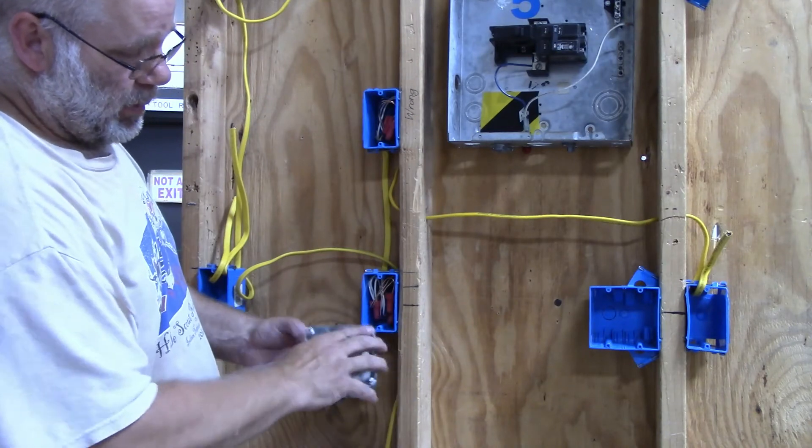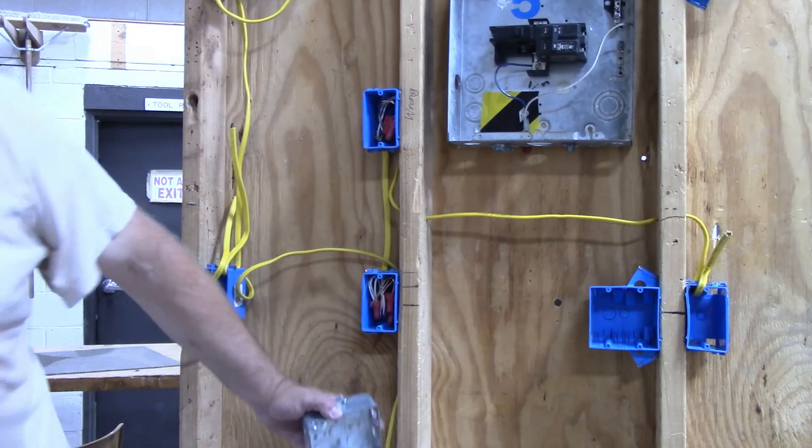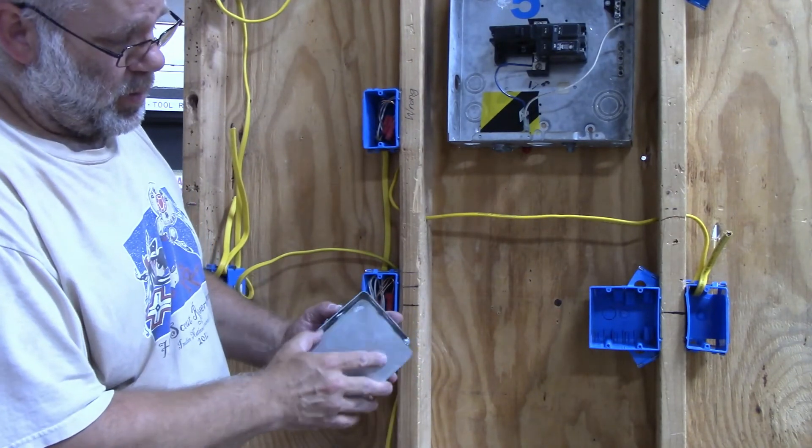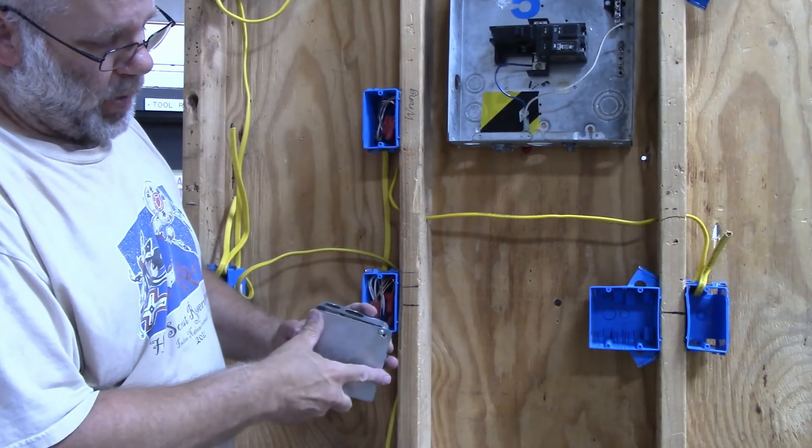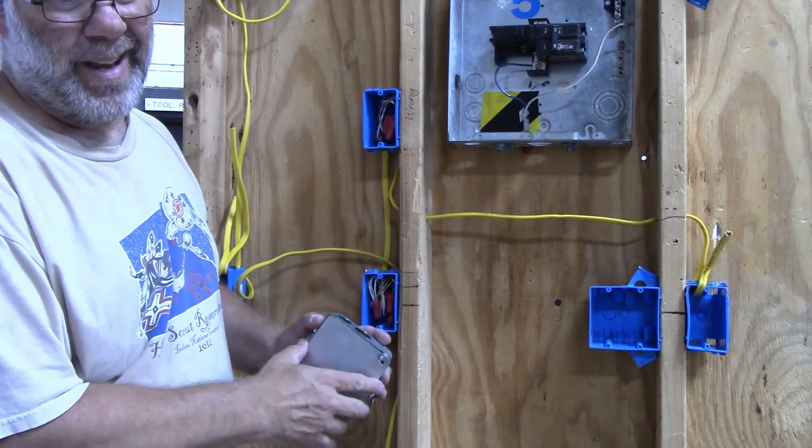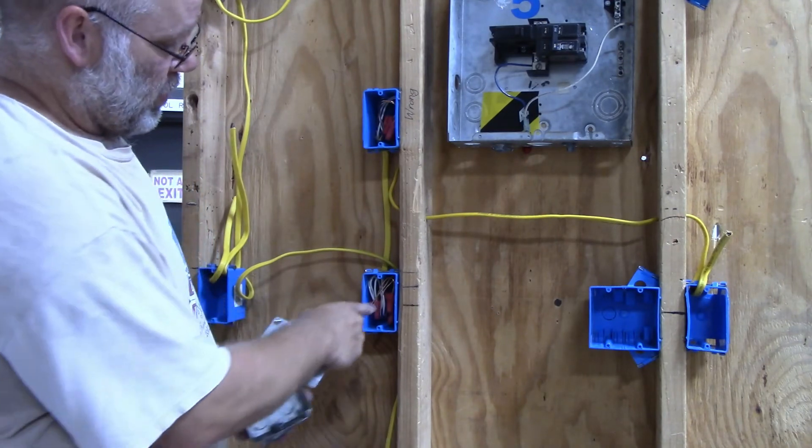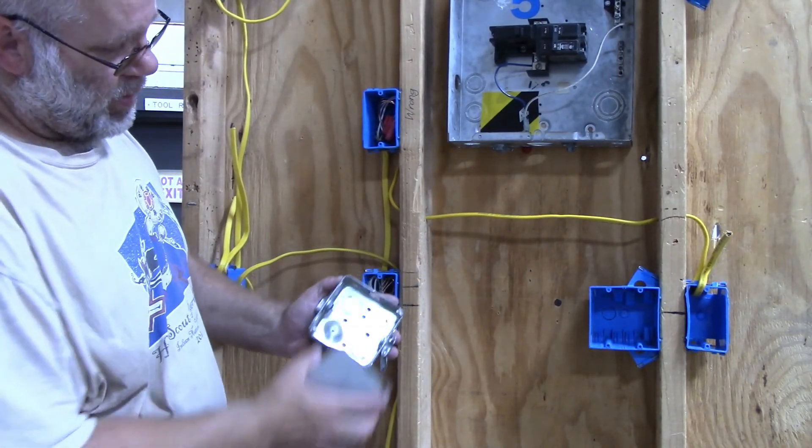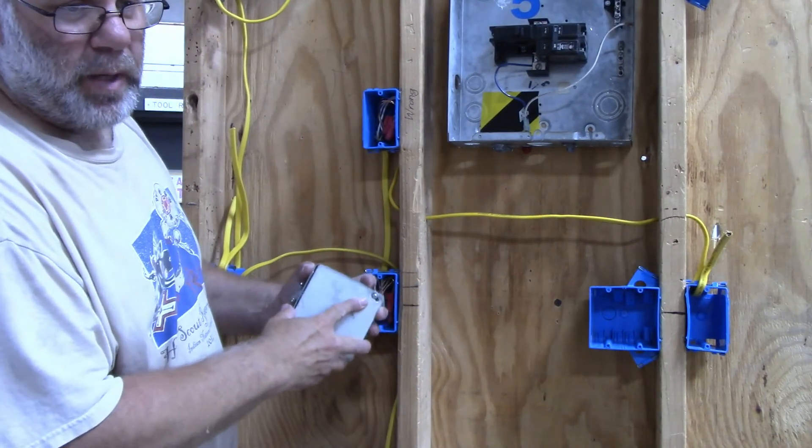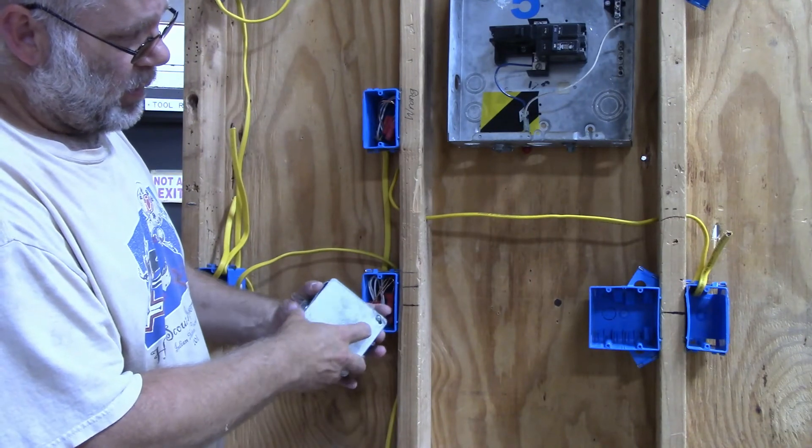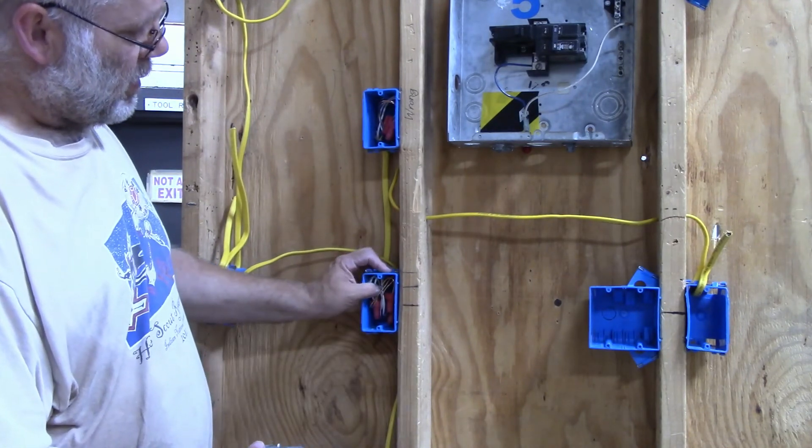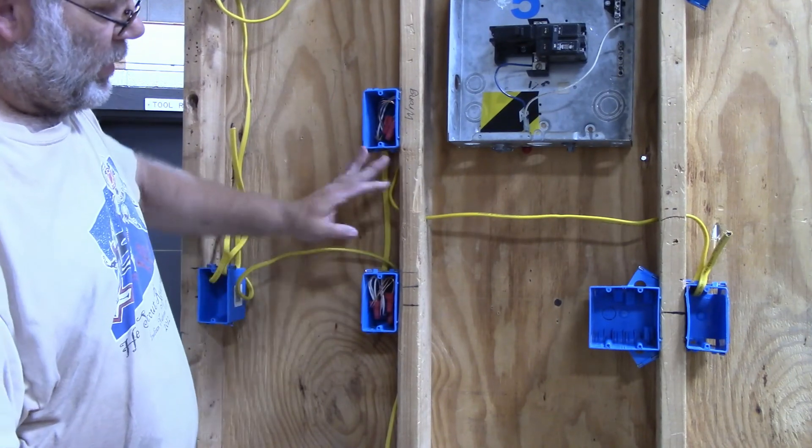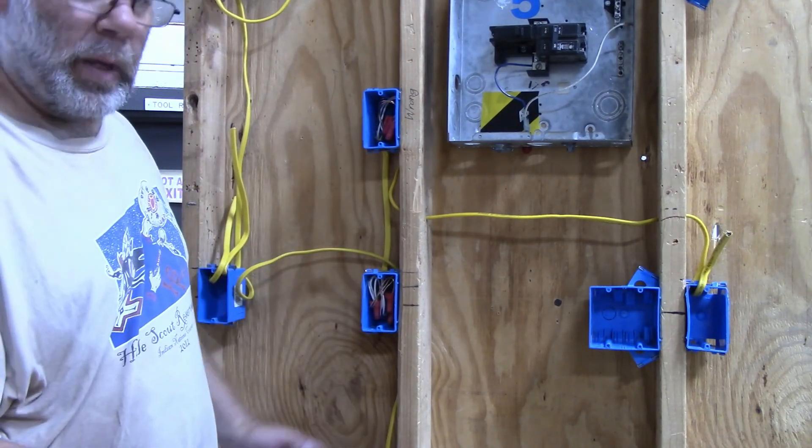And then of course, make sure you cover them up with a blank cover so you do not have any wires exposed. You cannot have any connections exposed. So if there's a wire nut on anything, it has to be covered up. So if I have wires in this box, then it has to be covered up. So this is how you would splice into an existing line to add a new outlet.